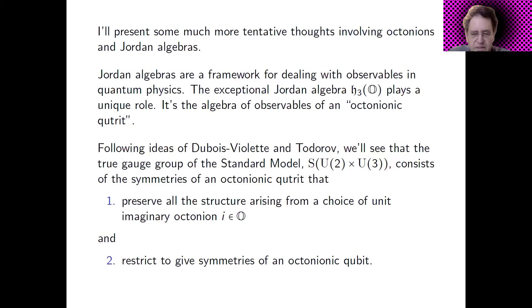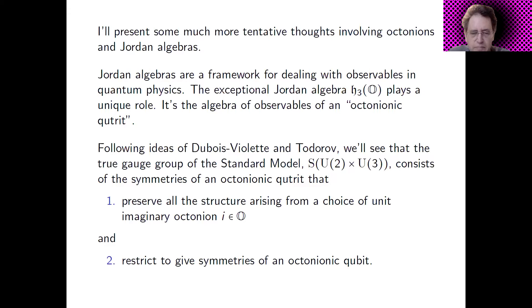I'm going to explain some ideas of Michelle Dubois-Violette and Ivan Todorov. We'll see the following purely mathematical result: the true gauge group of the standard model, S(U(2)×U(3)), consists of the symmetries of an octonionic qutrit that have two special properties. First, they preserve all the structure arising from a choice of a unit imaginary octonian, which I'll call i, picking out a copy of the complex numbers in the octonions. Second, they restrict to give symmetries of an octonionic qubit sitting inside the octonionic qutrit. I don't know what this means, but it's appealing because we're getting the gauge group of the standard model from ideas with resonance from the foundations of quantum physics.